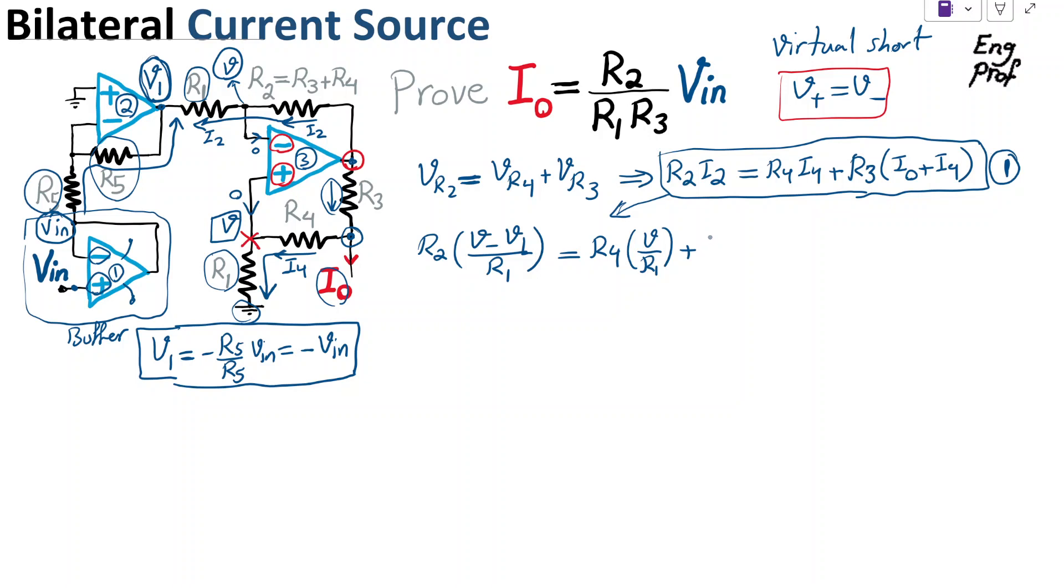Okay, so the last piece of puzzle is simply saying that, obviously, doing the same thing. I4 here is V over R1.